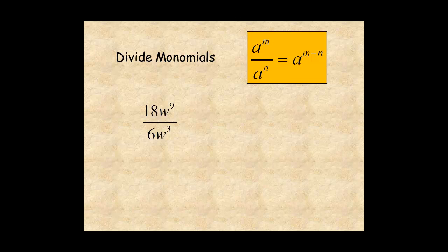In this example, there is division of constants and powers. First, divide the constants. 18 divided by 6 is 3. Then subtract the exponents, w to the power of 9 minus 3, and you get 3w to the power of 6.